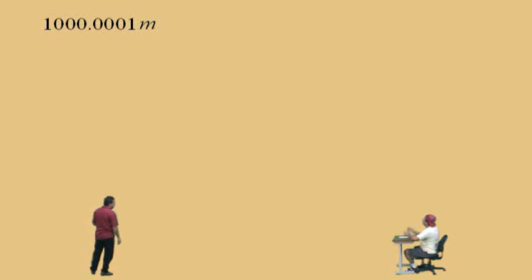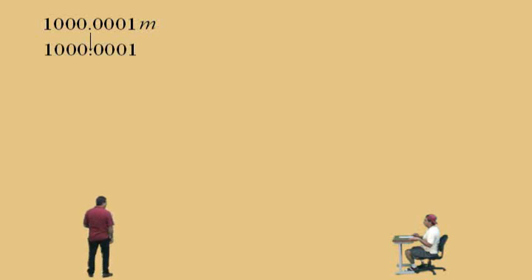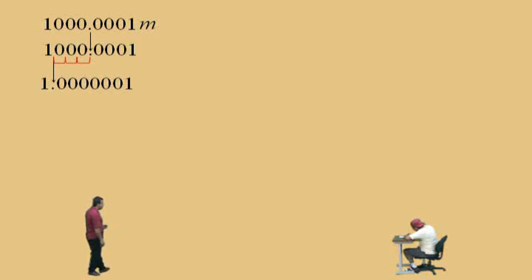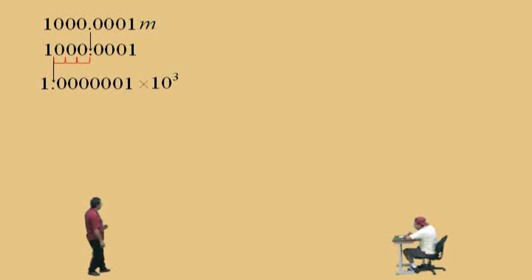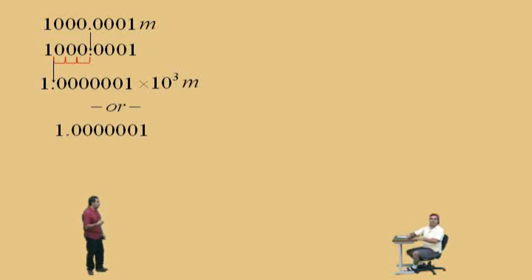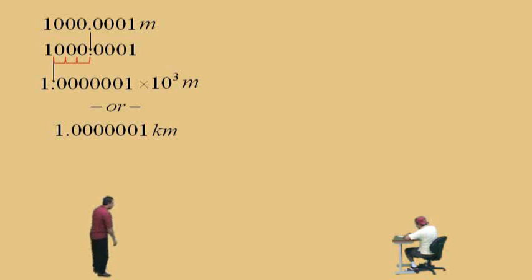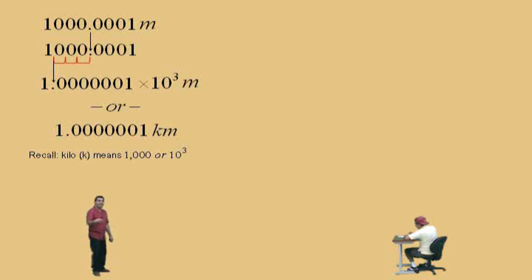Here's a tricky one: 1,000.0001 — that's 1,000 and 1 ten-thousandth. You move the decimal to the left 3 times, which gives you 1.0000001. The decimal was shifted 3 places, so in scientific notation we multiply by 10 to the third power, which puts the decimal back in the proper place. And since this was in meters, 10 to the third is the metric prefix kilo — so 1.0000001 × 10³ meters equals 1.0000001 kilometers.